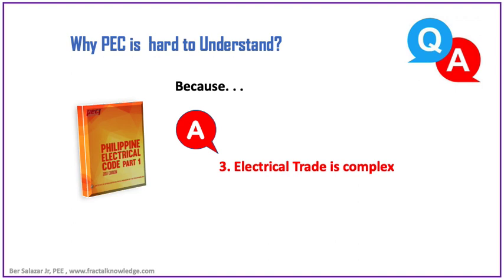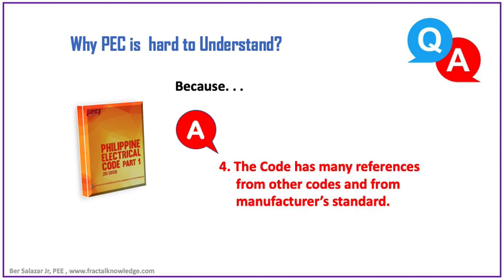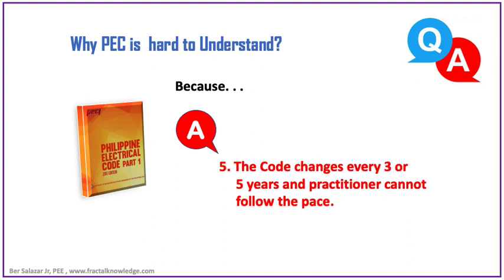The third reason why PEC is hard to understand is because the electrical trade is complex and the reader needs to make sure he knows what specific topic he wants to reference in the PEC. If you check the table of contents, you will see a lot of electrical-related topics. The fourth reason is because the code has many references from other existing codes, manufacturer standards, and other technical applications. This complicates the basic understanding of PEC. The fifth reason is because the code changes every 3 to 5 years and practitioners cannot follow the phases of changes.